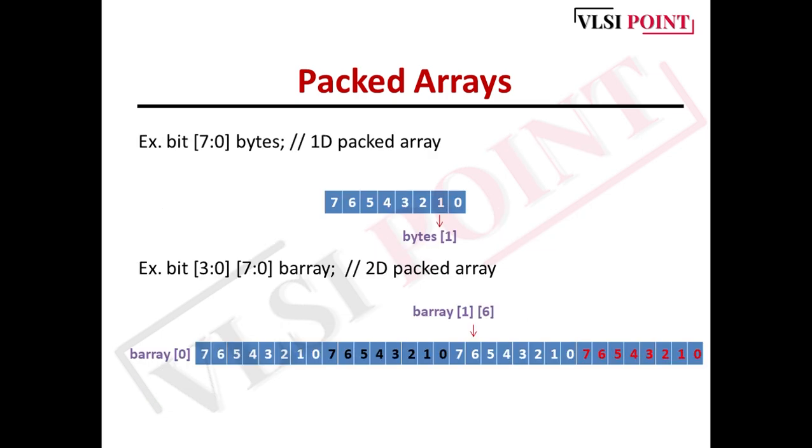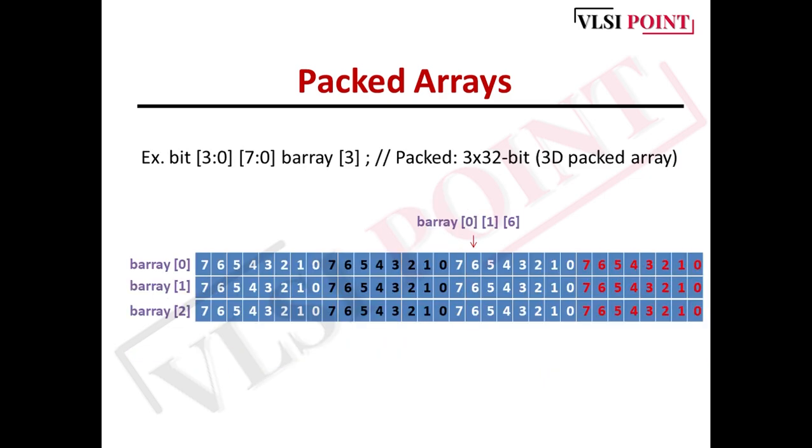You can see here we have bit [7:0] bytes. It is an example of one dimensional packed array. We have bytes of zero, bytes of one, bytes of two till bytes of seven. Another one is bit [3:0][7:0] B_array. It is an example of two dimensional packed array. You can see here eight bits, then again eight bits, eight bits, and eight bits. Total 32 bits are packed here. Another one is bit [3:0][7:0] B_array[3]. This is an example of three dimensional packed array. Here you have B_array of zero, B_array of one, B_array of two, and each one is of 32 bits. That is four eight bits combination. As I already told, it is bit oriented.